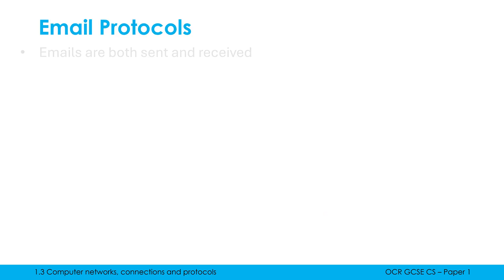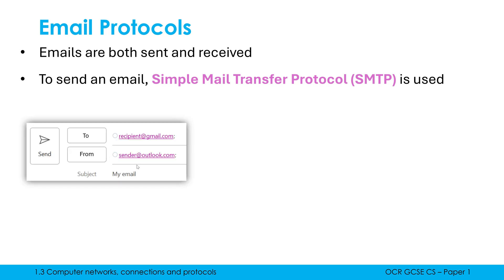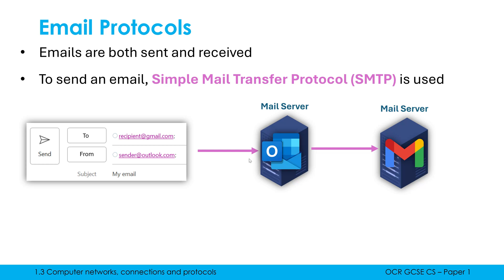Now there are three email protocols to round out this video. Emails get both sent and received, and there are very different protocols for either of these jobs. Focusing on sending emails, there's really only one option, which is SMTP — this stands for Simple Mail Transfer Protocol. Here is a typical email: I'm sending it to recipient@gmail.com, coming from sender@outlook.com. The two relevant servers here are Gmail and Outlook.